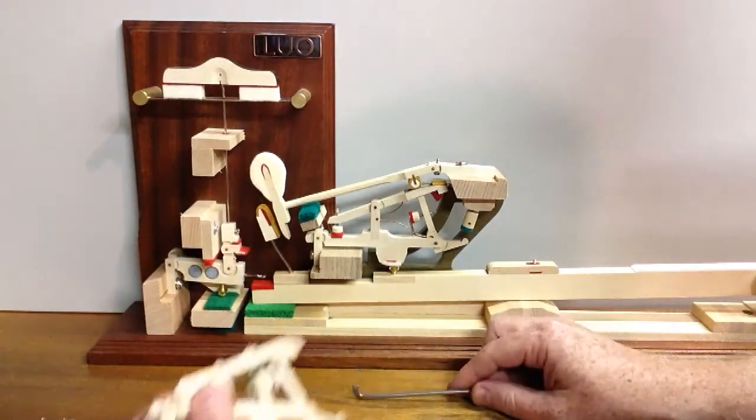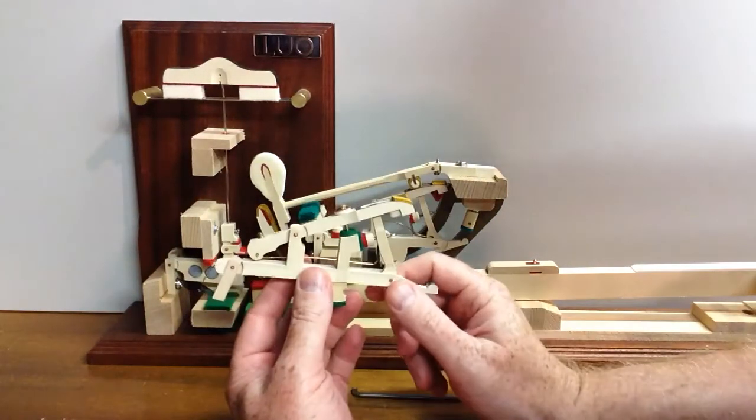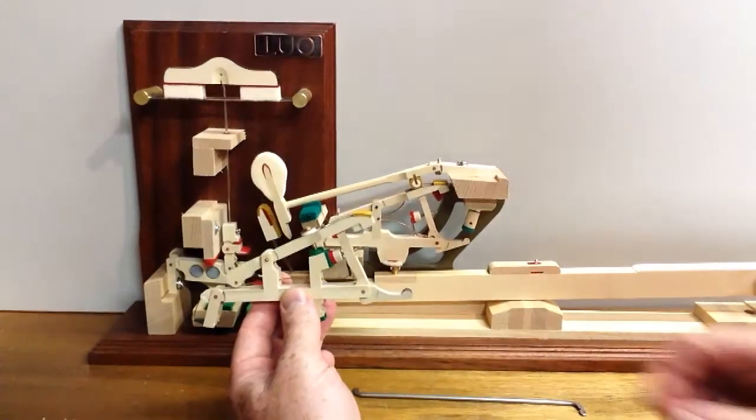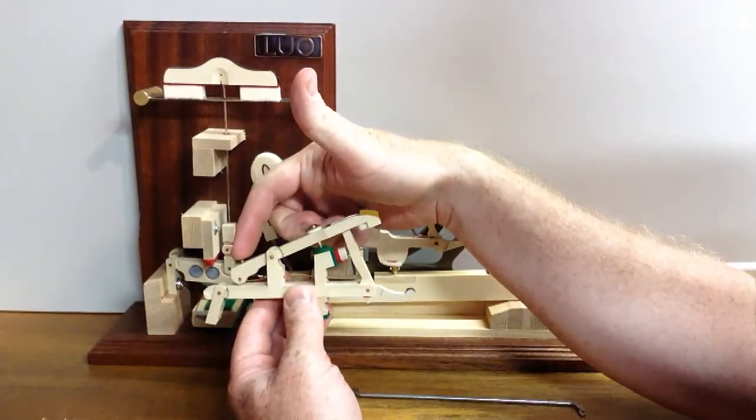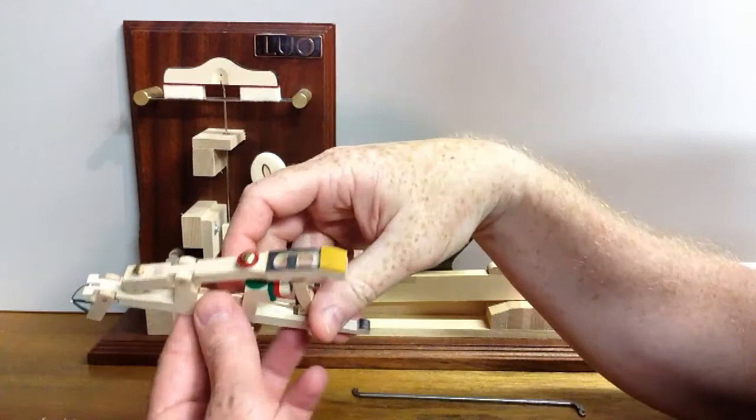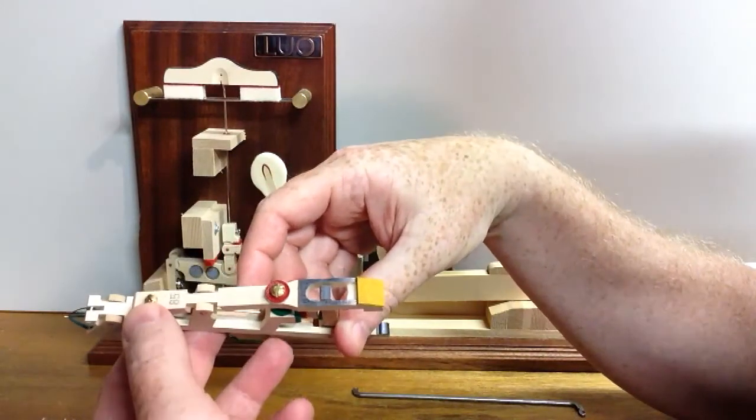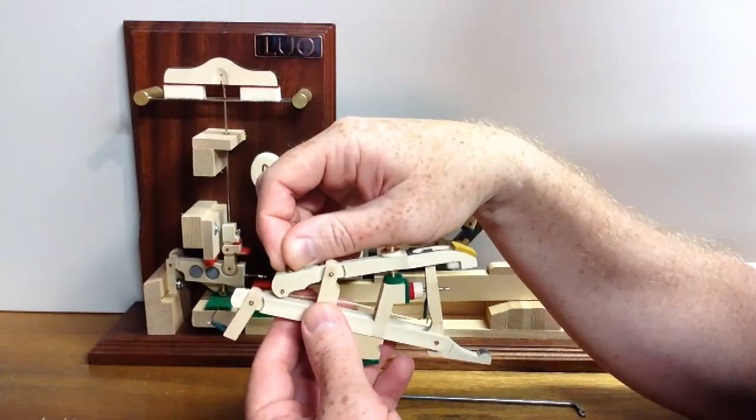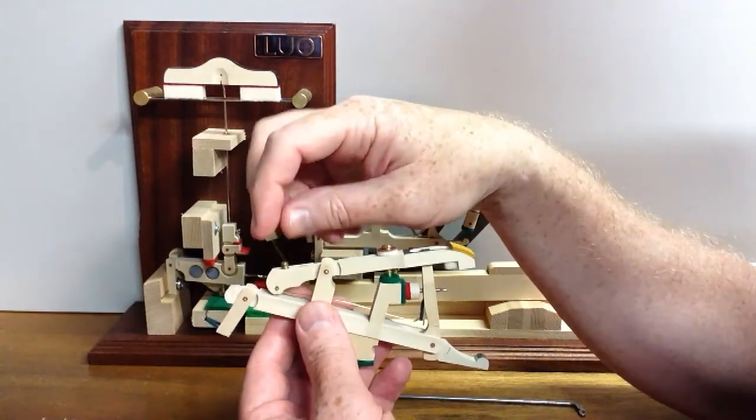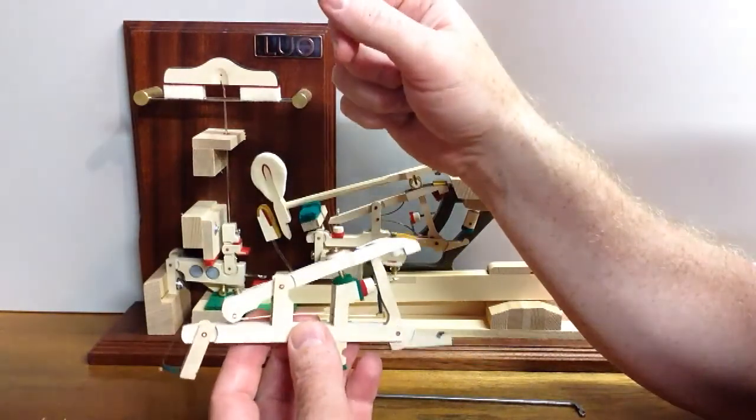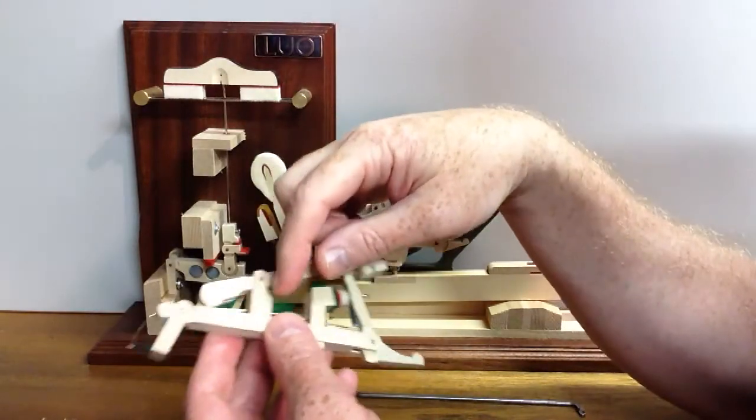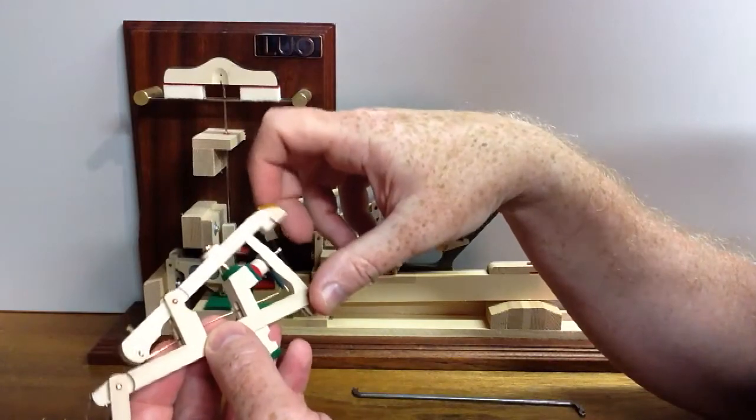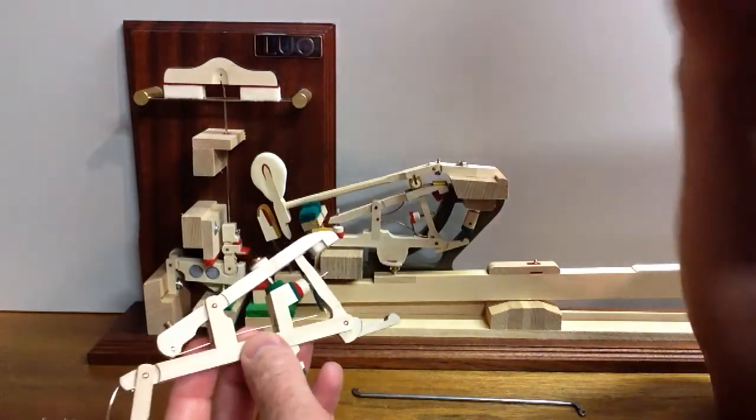Now on this type of whippen, the way to adjust it is if you want to make the spring stronger there's a screw on the back right here and you're going to turn it clockwise to make it stronger or counterclockwise to make it weaker. What that does is that strengthens this spring so that it's got more tension on the repetition lever.